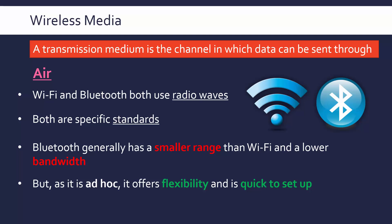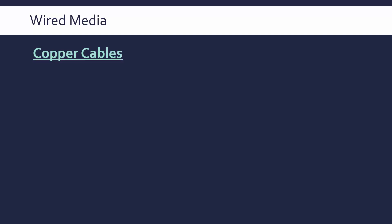That was a quick comparison between Bluetooth and Wi-Fi. A common exam question is whether it's more suitable to go for a wired or wireless network — I'll leave that full evaluation for another video. For now, I want to cover two common examples of wired media, the first of which are copper cables.